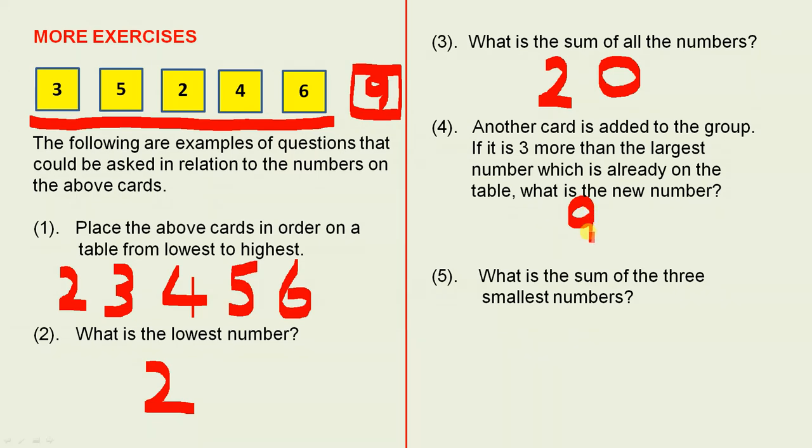What is the sum of the 3 smallest numbers? Now we've already seen that the 3 smallest are 2, 3, and 4. 2 plus 3 is 5, 5 plus 4 is 9.